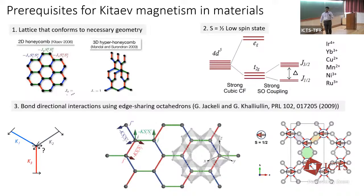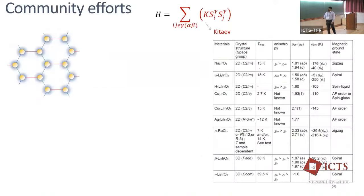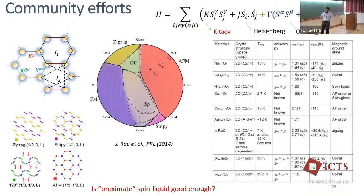We started working on Kitaev quantum spin liquids in ruthenium trichloride. The seminal paper by Jackeli and Khaliullin was very important for figuring out which materials to target. You need a honeycomb lattice with an octahedral cage of anions, where the Heisenberg isotropic interactions cancel out to leave just the Kitaev interactions. Many groups made a host of these materials, including ourselves. But what we find is that after spending two or three years in the lab making a material, these materials order — it's not a quantum spin liquid.